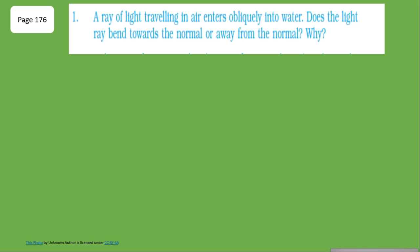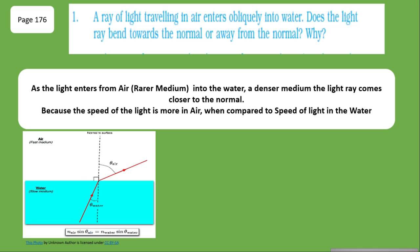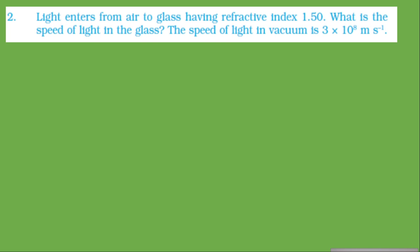The next question: a ray of light traveling in air enters obliquely into water. Does the light ray bend towards the normal or away from the normal, and why? We know that the speed of light in a denser medium is less than in a rarer medium. Here, air is the rarer medium and water is the denser medium, so the speed of the light ray decreases when it goes from air to water, and therefore it bends towards the normal.